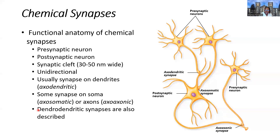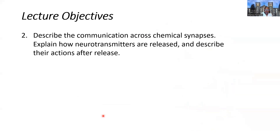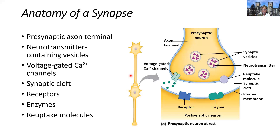There are also sometimes dendrodendritic synapses — very, very rare — but they can occur where one dendrite synapses onto the adjacent dendrite of the postsynaptic neuron. Our next objective is to look at the communication across chemical synapses, explaining how neurotransmitters are released and describing their actions after they are released — really the details of chemical synapses.